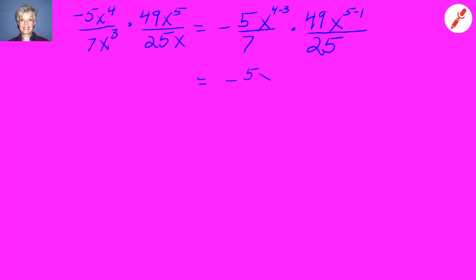That will give us negative 5x or x to the 1 over 7 times 49 x to the fourth over 25. Now we'll do some cross canceling. 5 goes into 25 five times and 7 goes into 49 seven times. So what we'll end up with is negative 7x to the fifth, because we have x times x to the fourth, that's x to the fifth.